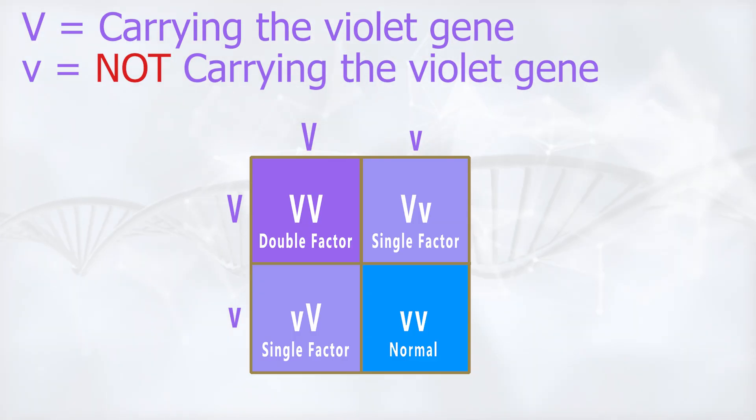Single factor, where the bird has only one copy of the violet gene present from one of the parents, and double factor, where the bird has two copies of the violet gene from each parent.